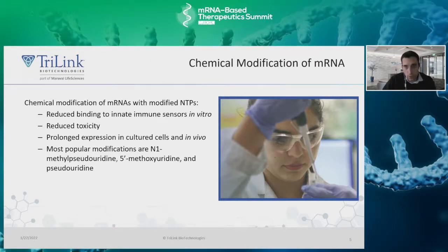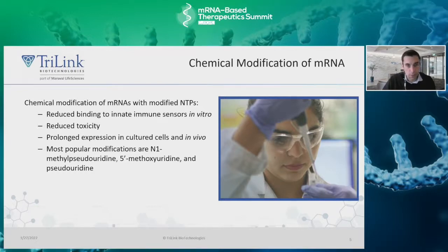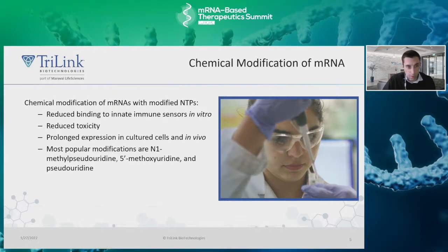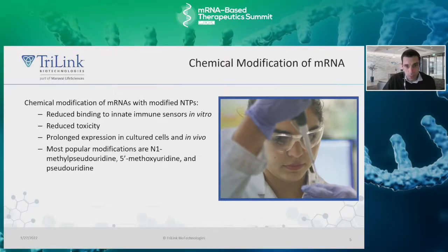Now that we have covered some of the basics, let's move on to ways to optimize your mRNA construct. The first and foremost used method for optimization is chemical modifications to improve efficacy. One of the easiest ways to gain immune response mitigation is the use of modified bases, specifically modified uridines. Wild-type uridines can trigger immune responses when introduced to the cell, leading to degradation by intracellular organelles and limiting the longevity and efficiency of protein expression. Modified NTPs can reduce binding to innate immune sensors during in vitro application, reduce toxicity, and lead to prolonged expression in cultured cells. This effect also translates to in vivo application, where modified NTPs can lead to sustained expression of the target protein.